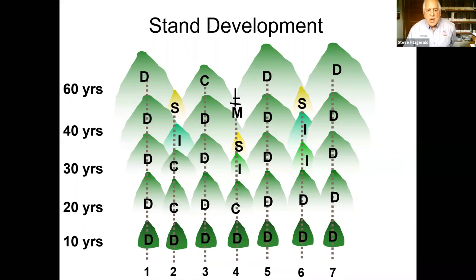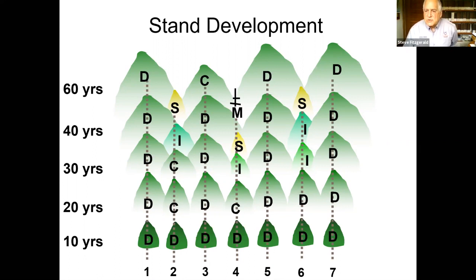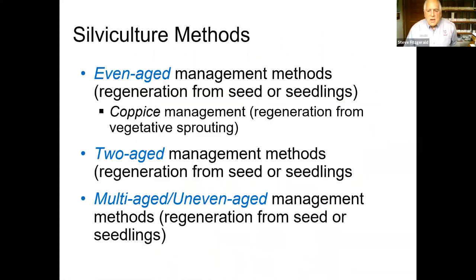Crown classes are important to note. Dominant and co-dominant trees may constitute 50% of the total number of trees per acre but they constitute probably two thirds of the growth. In thinning or forest health treatments, we tend to remove the intermediate, suppressed, or any trees that have some other kind of health-related issue.